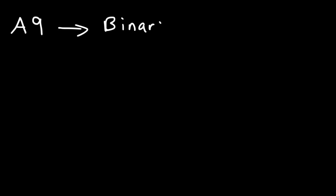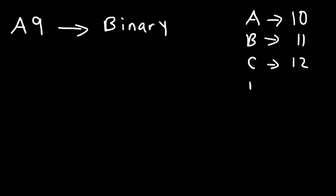In this video, we're going to talk about how to convert hexadecimal numbers into binary numbers. In the hexadecimal system, A corresponds to 10 in the decimal system, B corresponds to 11, C corresponds to 12, D corresponds to 13, E corresponds to 14, and F corresponds to 15.